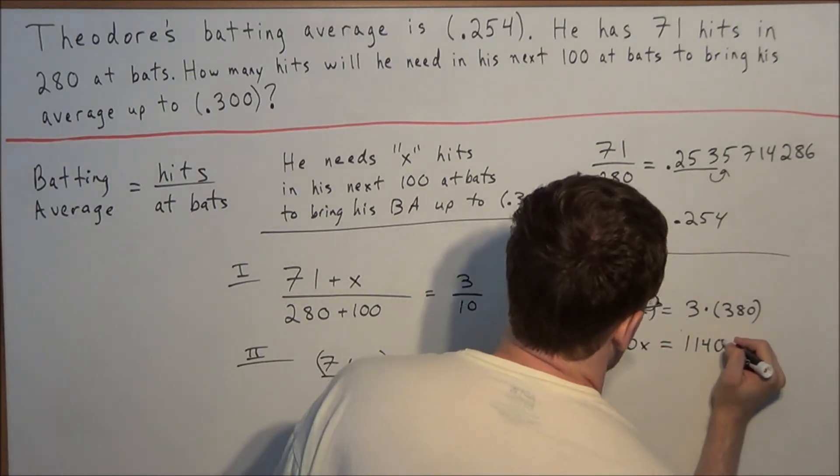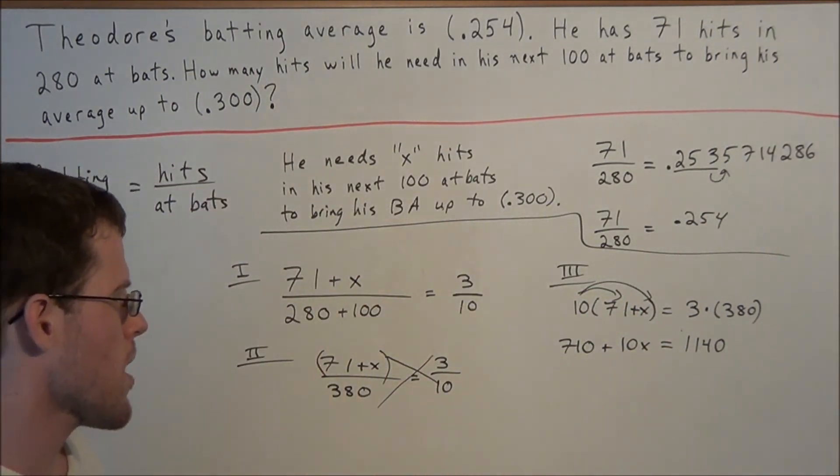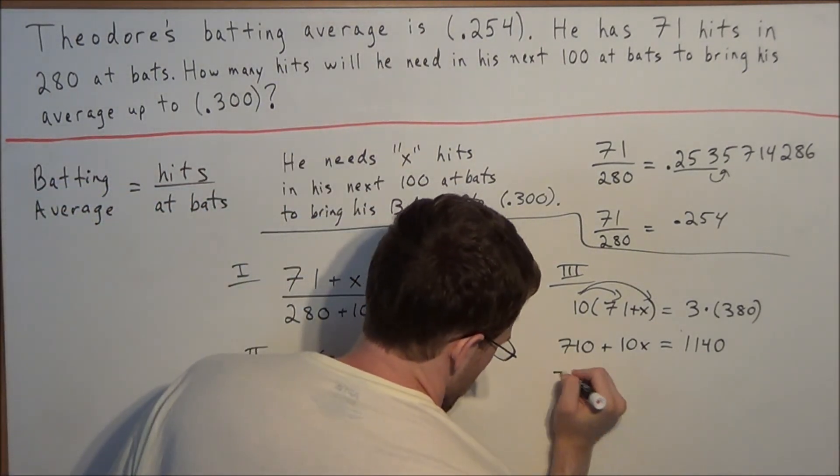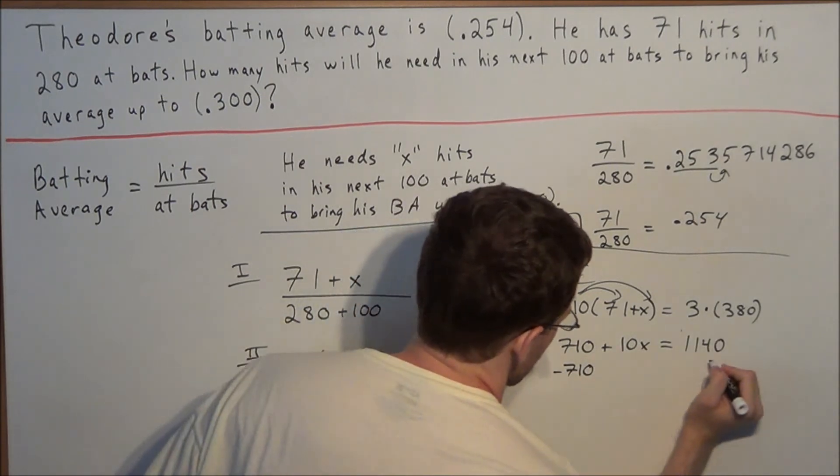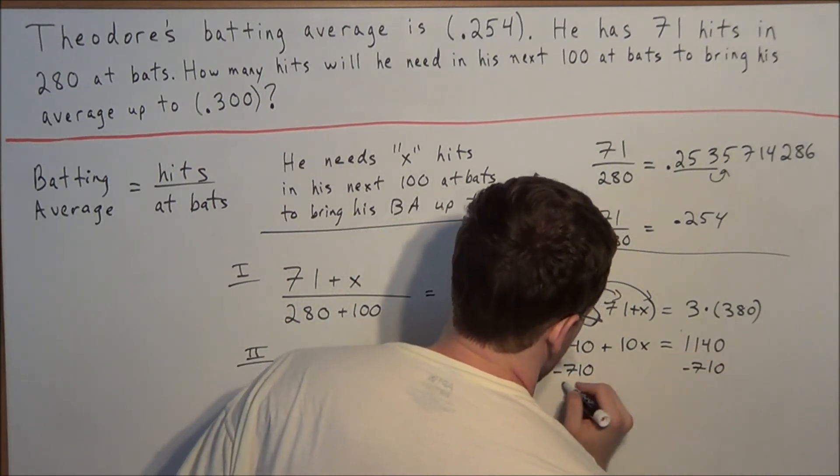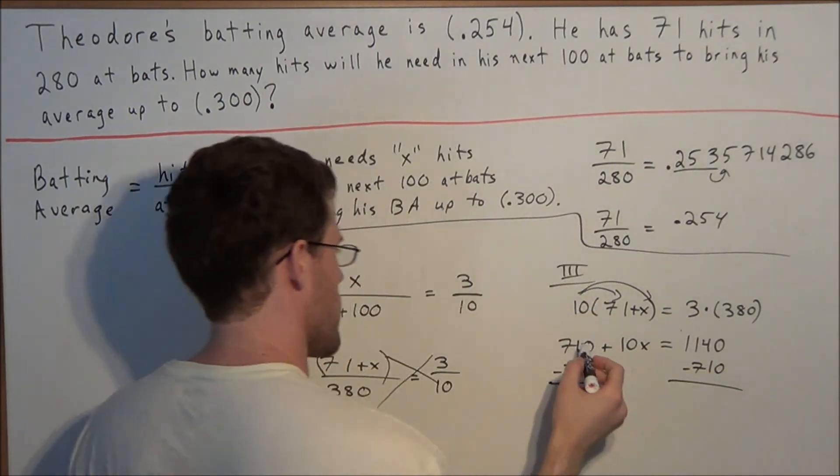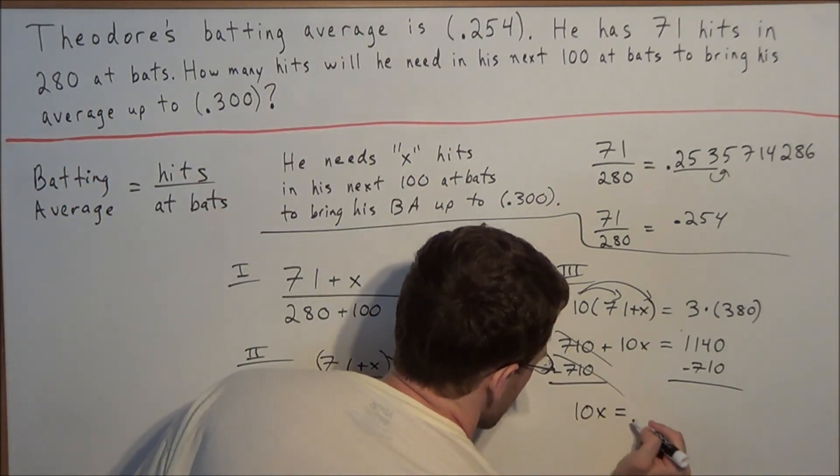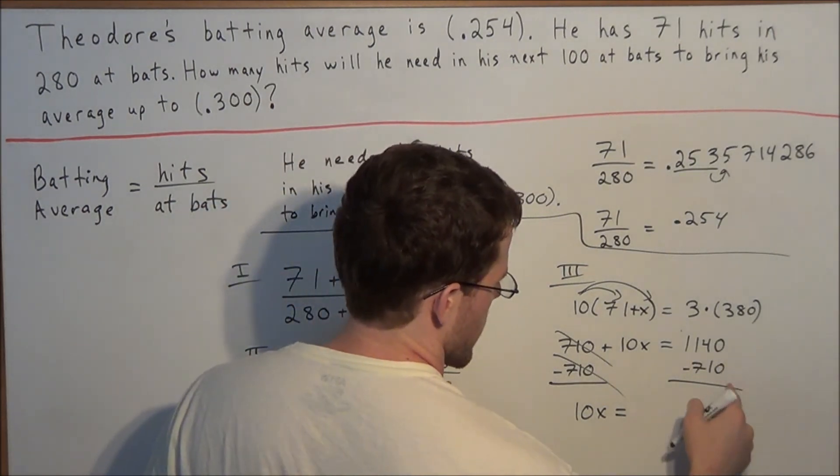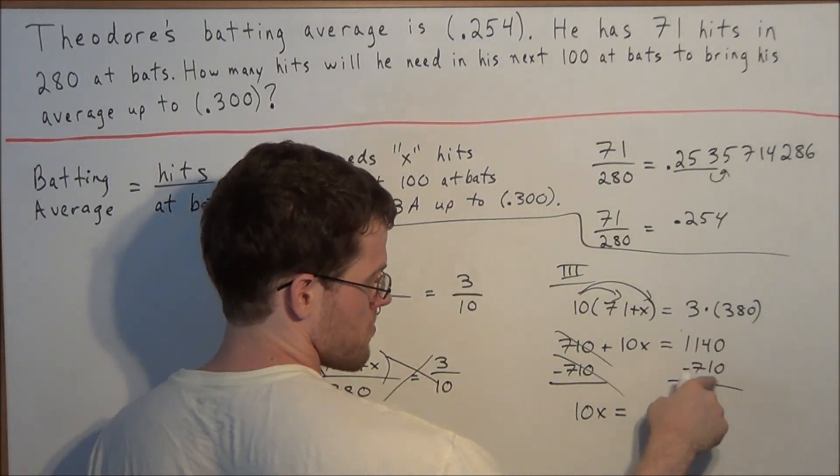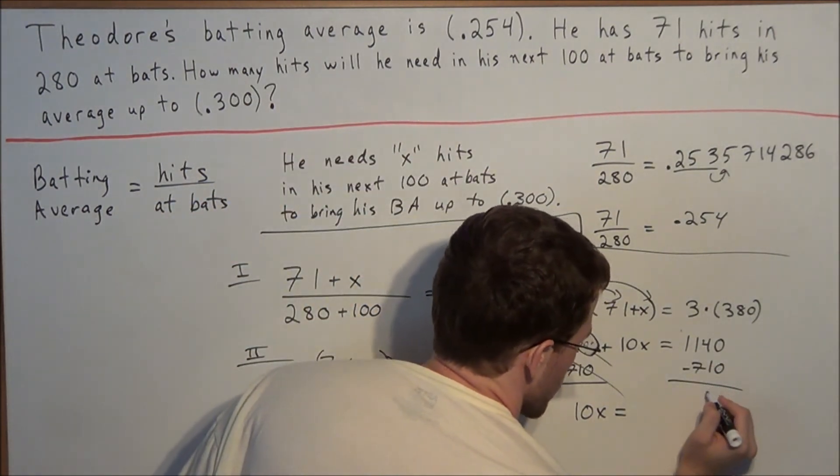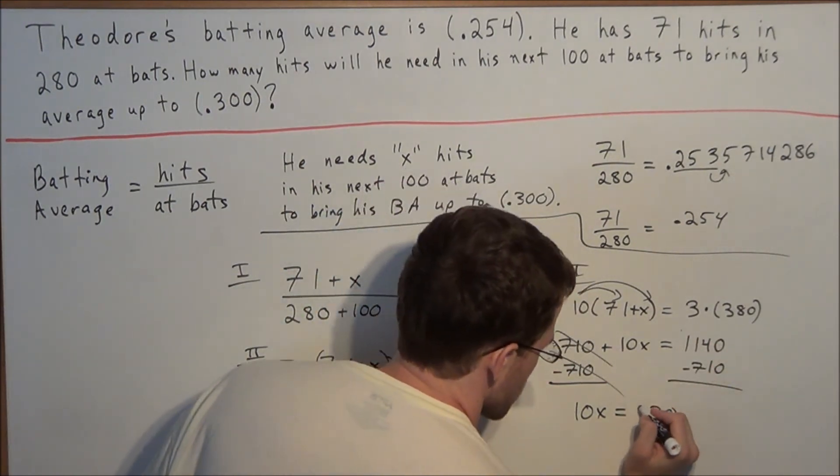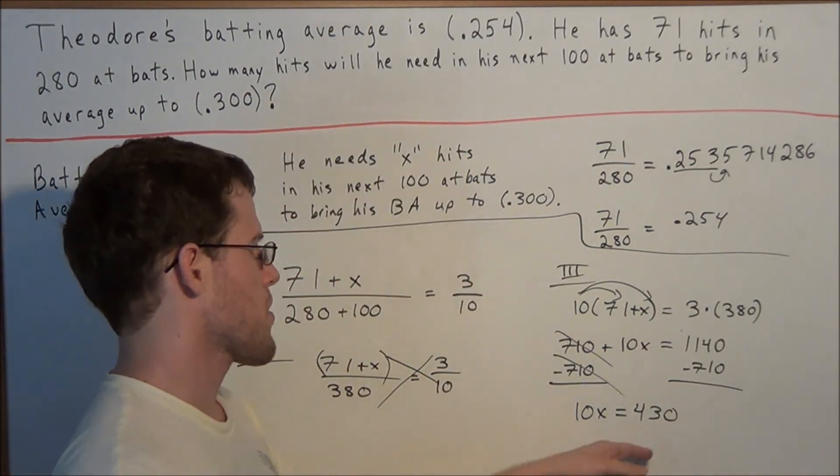So now this just turns into a simple algebra problem where to solve for x, we need to get x by itself, so we're going to subtract 710 from both sides. And now 710 minus 710 will cancel, and we have 10x is equal to, and now we're going to subtract 1140 minus 710, where we get 0 minus 0 is 0, 4 minus 1 is 3, and 11 minus 7 is 4, so this is equal to 430.